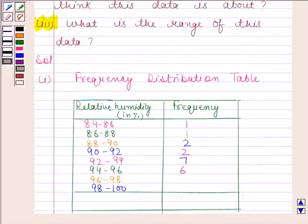Similarly we will fill the frequency of these two intervals. Frequency of interval 96 to 98 is 7. And frequency of last interval is 4. Adding all these frequencies, we get 30. This is our required table. So this completes the first part.